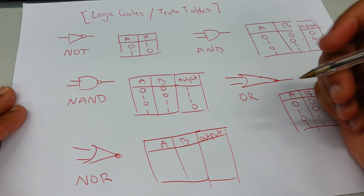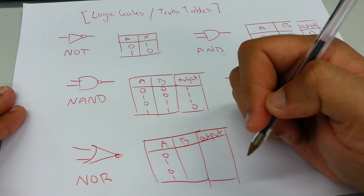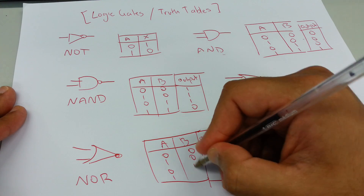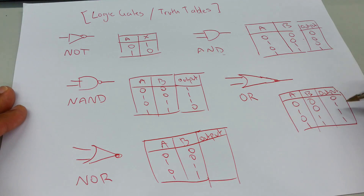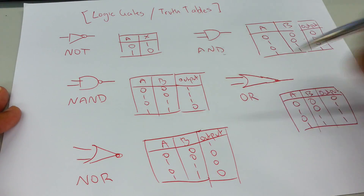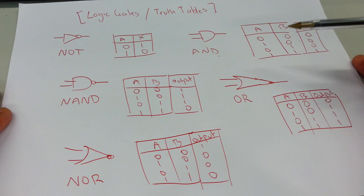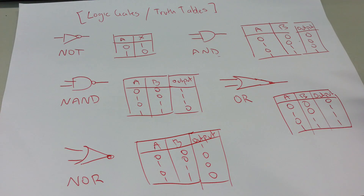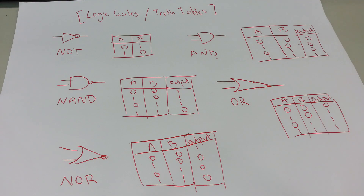For the OR gate it's: 0, 1, 0, 1 and 0, 0, 1, 1 and the outputs are: 0, 1, 1, 1. So these are all the logic gates. The ones we missed are exclusive OR and exclusive NOR — we may look at those in the near future. For the time being, these are the gates you need to know about if you're a computer scientist. That's it for this tutorial, I'll see you guys in the next one.